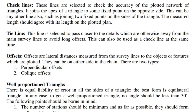Tie line: A tie line is selected to pass closer to details which are otherwise away from the main survey lines, to avoid long offsets. It can also be used as a check line at the same time. Offsets are lateral distances measured from the survey lines to objects or features to be plotted, and can be on either side of the chain. There are two types: 1. Perpendicular offsets and 2. Oblique offsets.